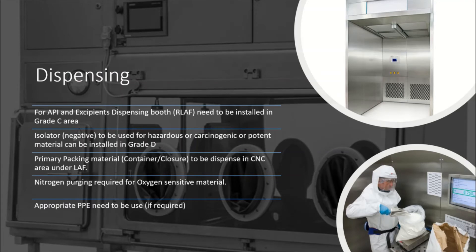The next major step is dispensing, where we ensure all raw materials, API, solvents, and whatever is required for manufacturing are dispensed. Dispensing areas are installed and maintained as Grade C. We perform dispensing under laminar air flow (LAF). There is also the option of doing dispensing of raw material and API under isolators — negative isolators are majorly used for hazardous, cancerous, or potent materials. Isolators can be installed in Grade D or Grade C areas.